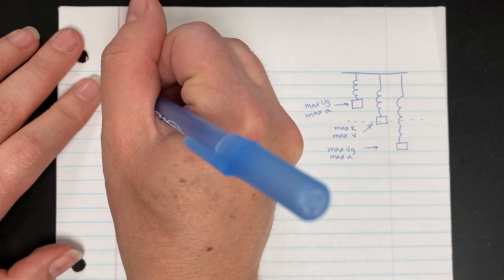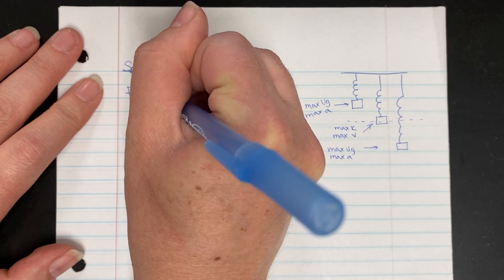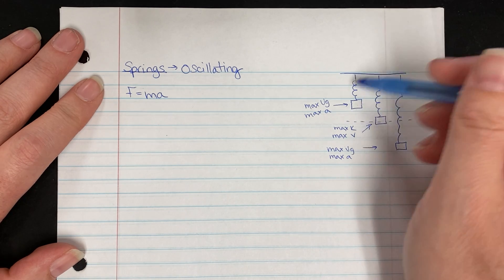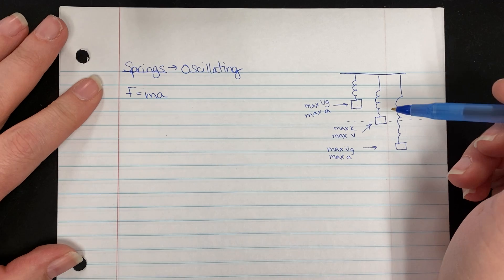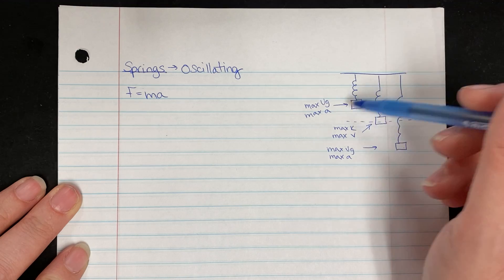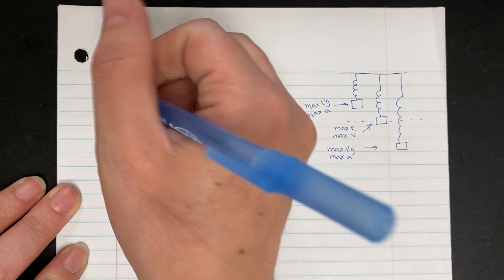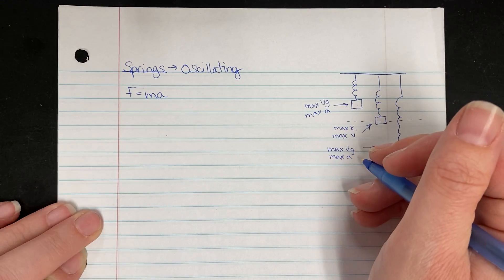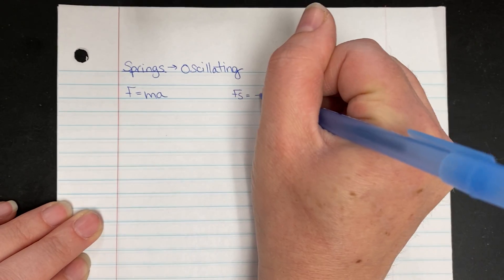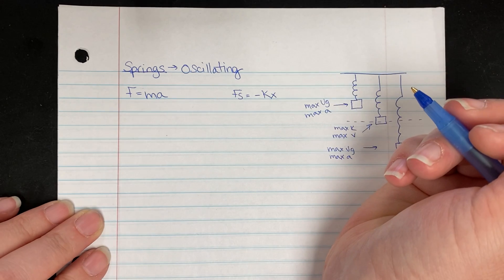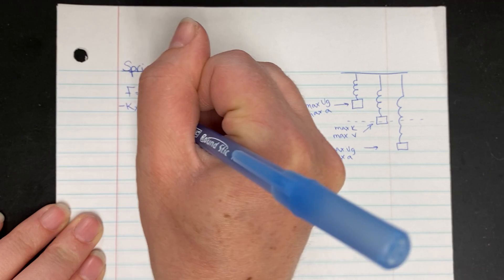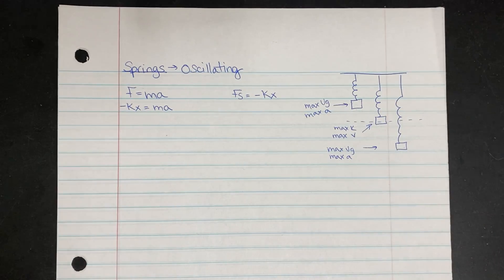Now we're wondering how do we figure out the period of this. So first things first, I said anytime we're deriving something, a good place to start is F equals MA. So what forces are acting on this particular object? Well, the forces acting are the spring force. So we would say the spring force, or Fs, is equal to negative KX. So I could say that negative KX therefore is equal to MA.